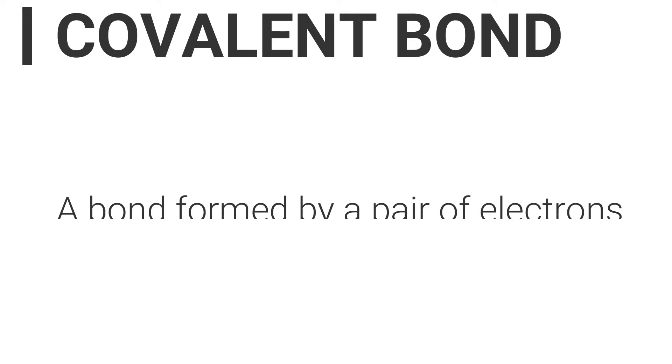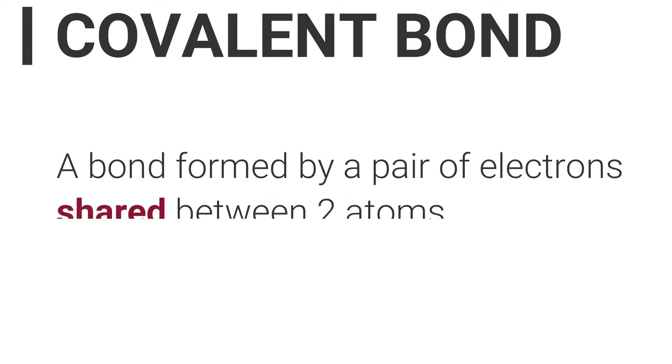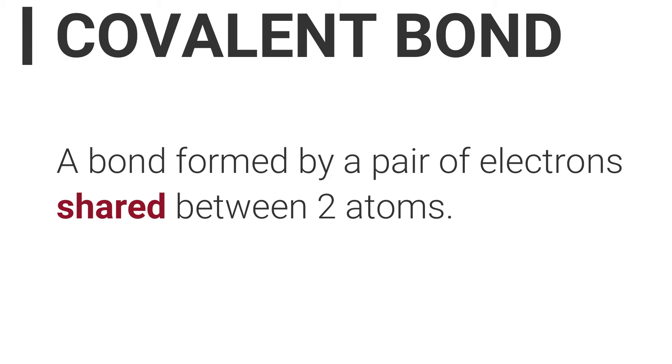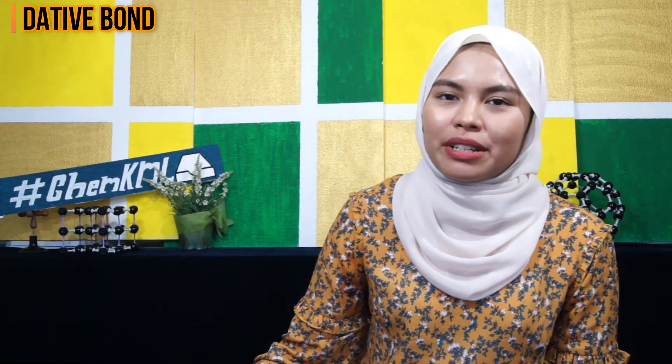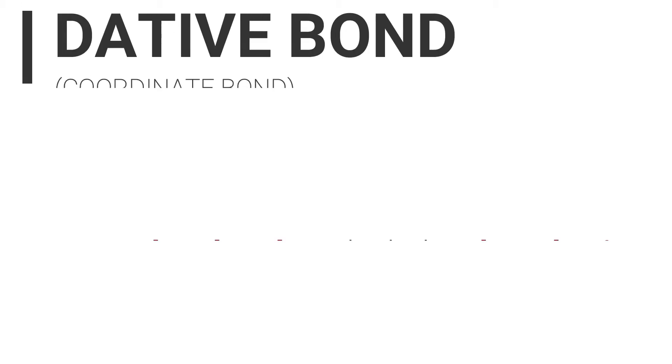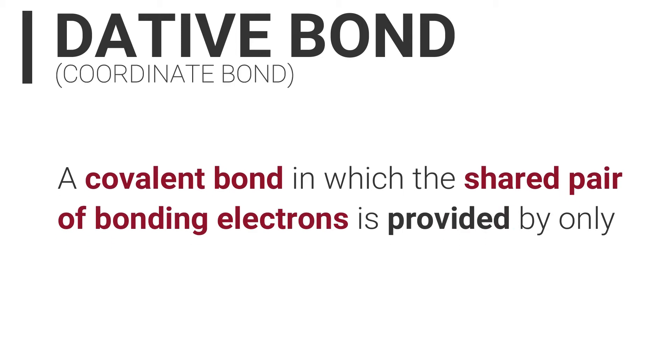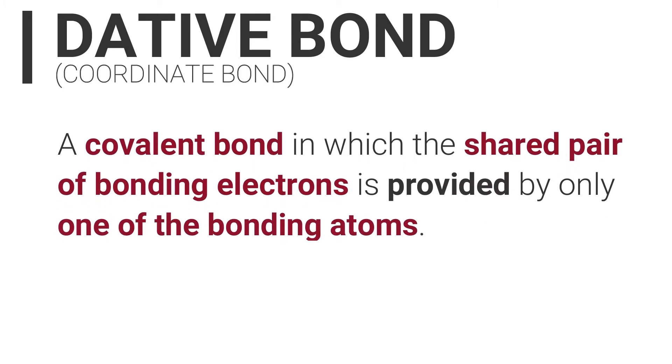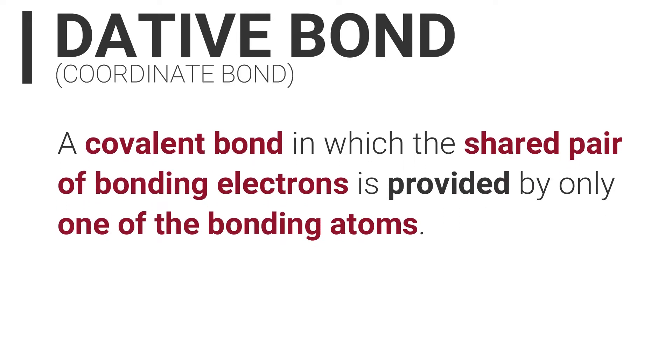The next type of chemical bond is covalent bond. What is covalent bond? Covalent bond is a bond formed by a pair of electrons shared between two atoms. Now let's move forward to the last type of chemical bond introduced earlier, which is dative bond, also known as coordinate bond. Dative bond is a covalent bond in which the shared pair of bonding electrons is provided by only one of the bonding atoms.